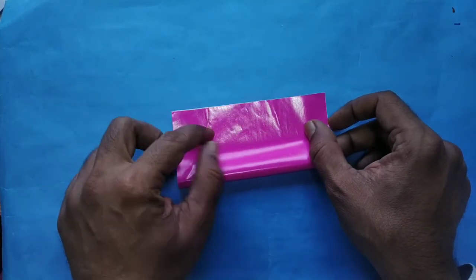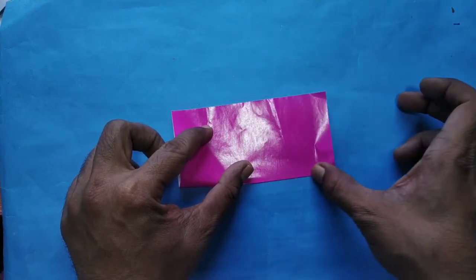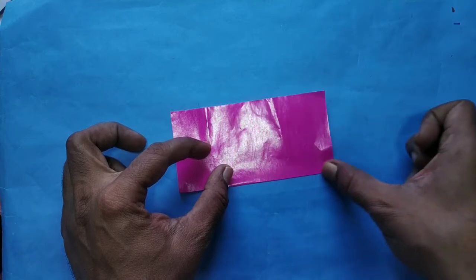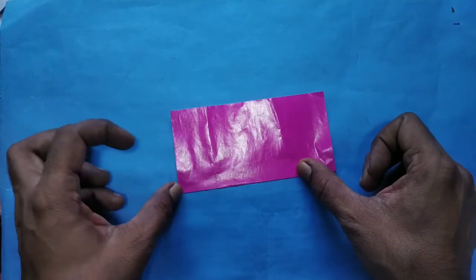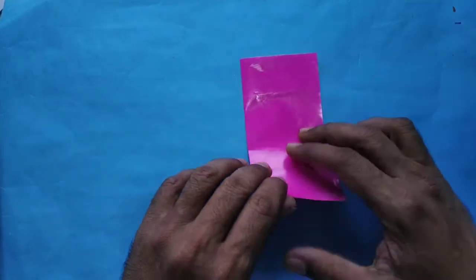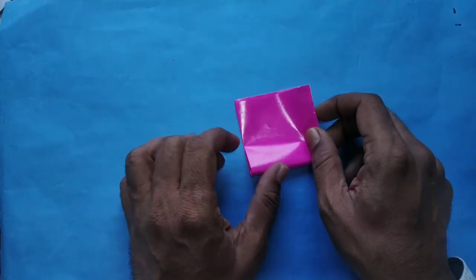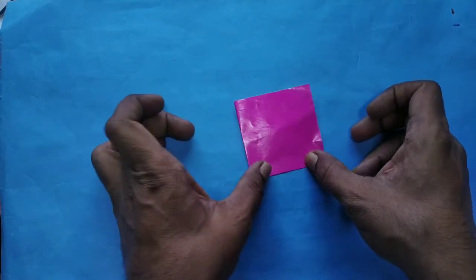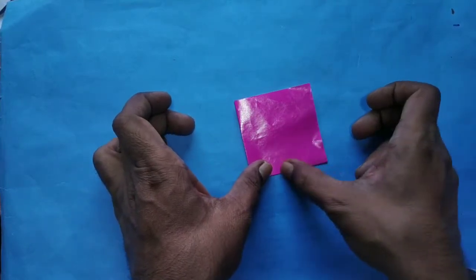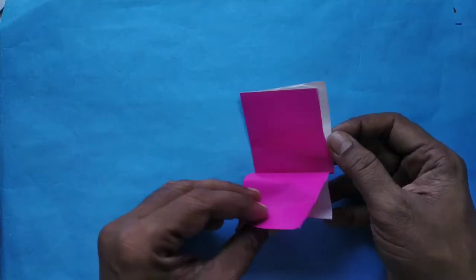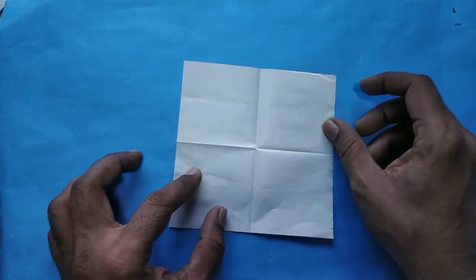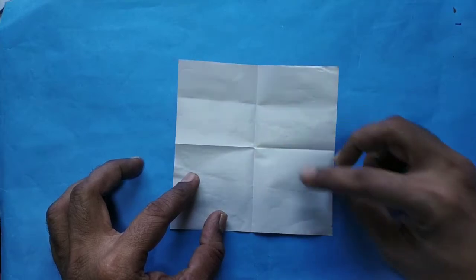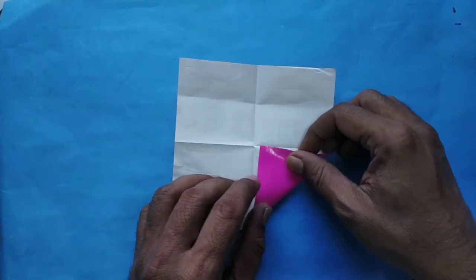Properly join the corners. Do the square fold by joining the two sides of the rectangle, then open it. You'll get four squares like this. This is the center point. Take this corner to the center.